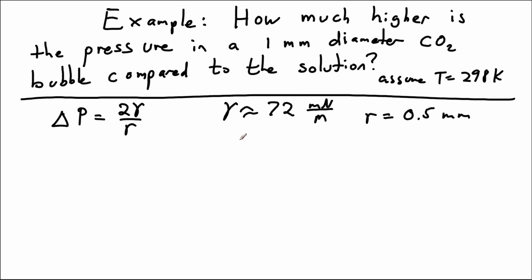So we've got 0.072 newtons per meter for gamma, and r is equal to 5 times 10^-4 meters. Let me just plug that in.